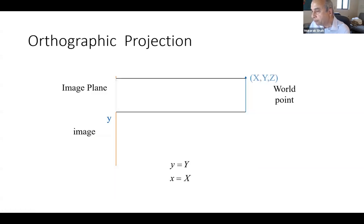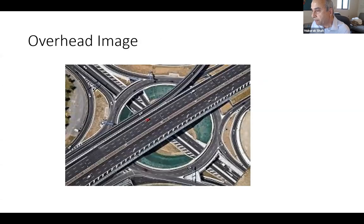Another projection model is called orthographic projection. If you take a picture from an airplane, the distance from the camera to the scene is very large compared to the sizes of objects, so we don't observe the perspective effect. In an overhead image like this, the roads appear pretty much parallel. That's another model.